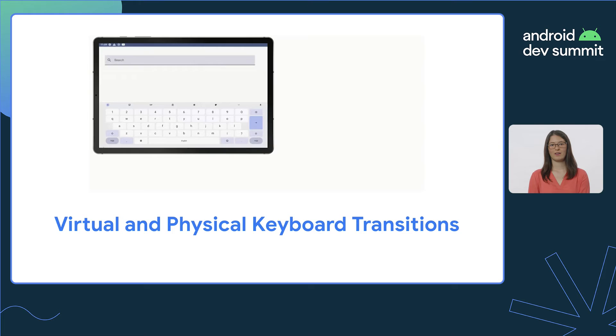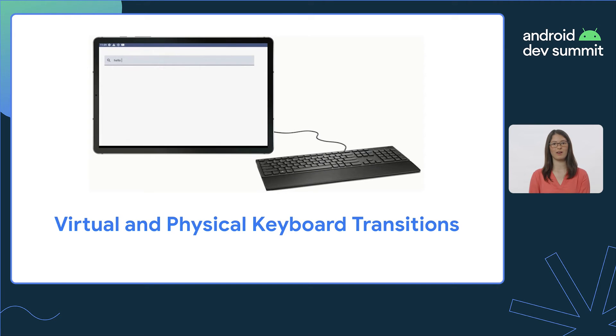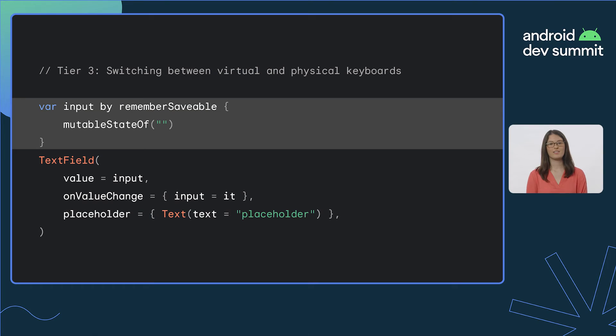To ensure a smooth transition between physical and virtual keyboards, you should ensure your app can handle both use cases without causing the app to restart. Switching between these two modes is important because a user could connect a physical keyboard while your app is open. On a tablet, this could mean a user has plugged in an external keyboard via USB or Bluetooth. On a Chromebook, a user might flip their device from tablet mode into standard desktop mode, meaning they've gone from using a virtual keyboard to a physical one. Developers can leverage the RememberSavable API, which will automatically save your state across configuration changes such as a keyboard being connected or disconnected, allowing your app to handle any keyboard input gracefully.